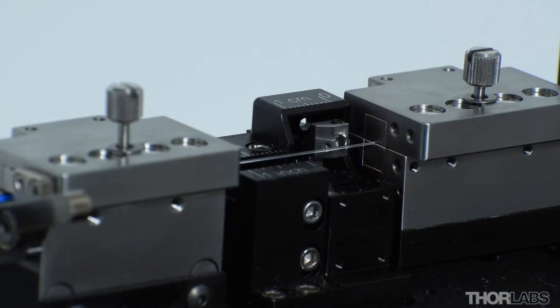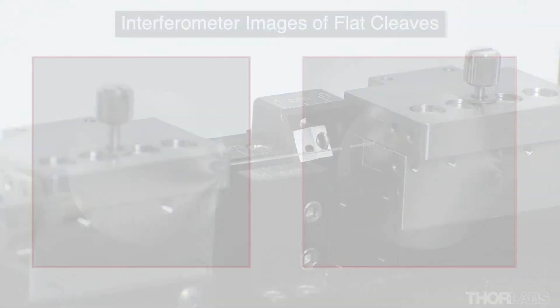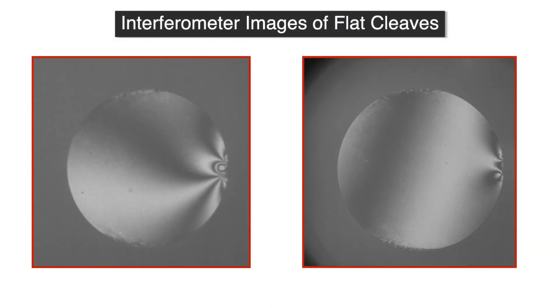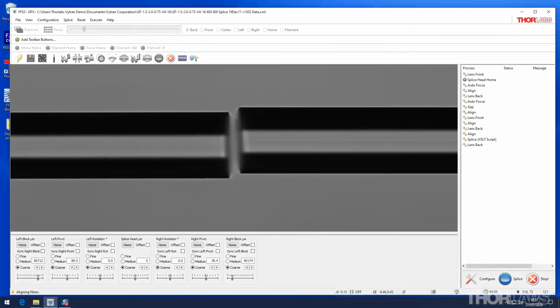Once the blade offset has been set, the cleave performance can be verified by observing the cleaved fiber on an interferometer or using a glass processor.